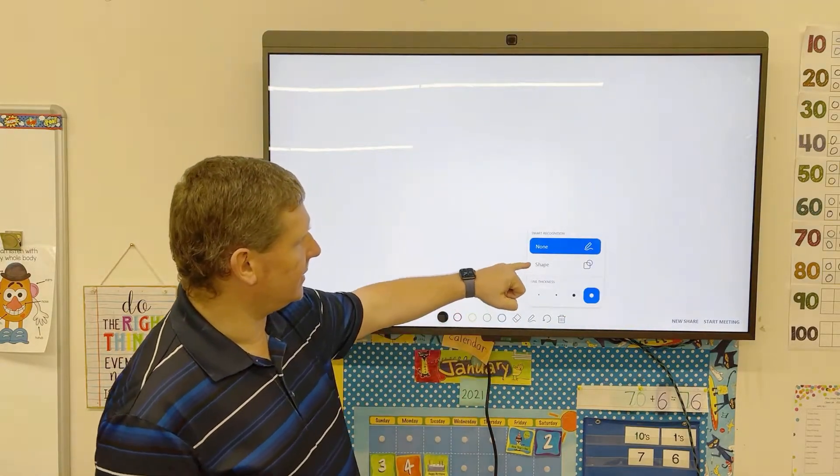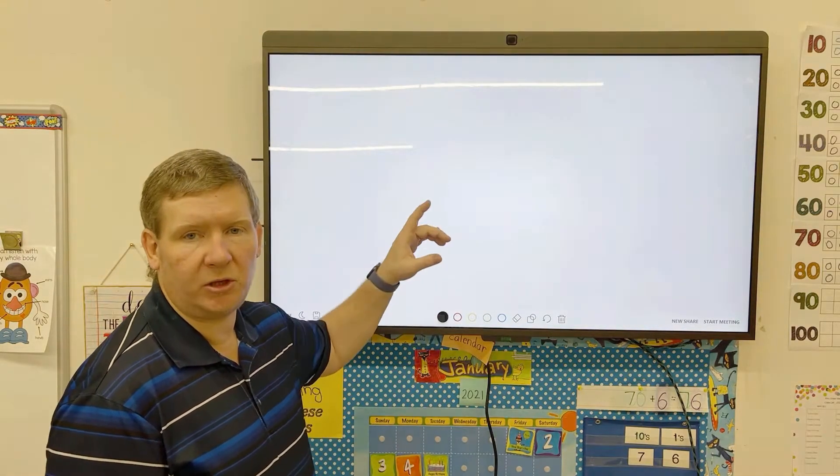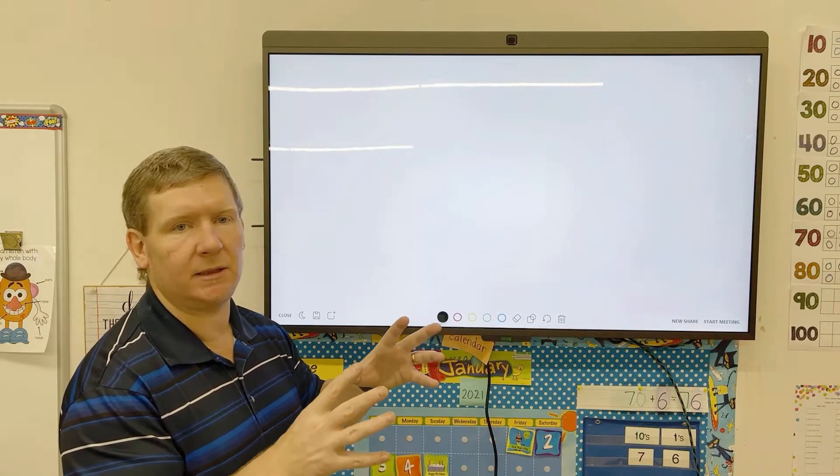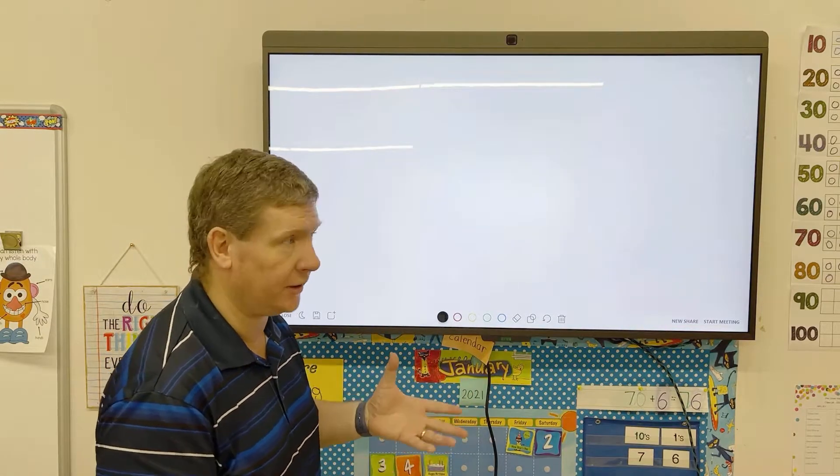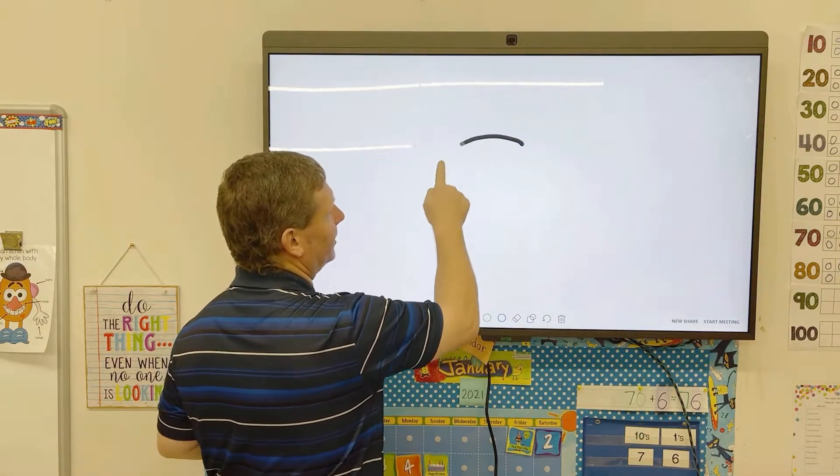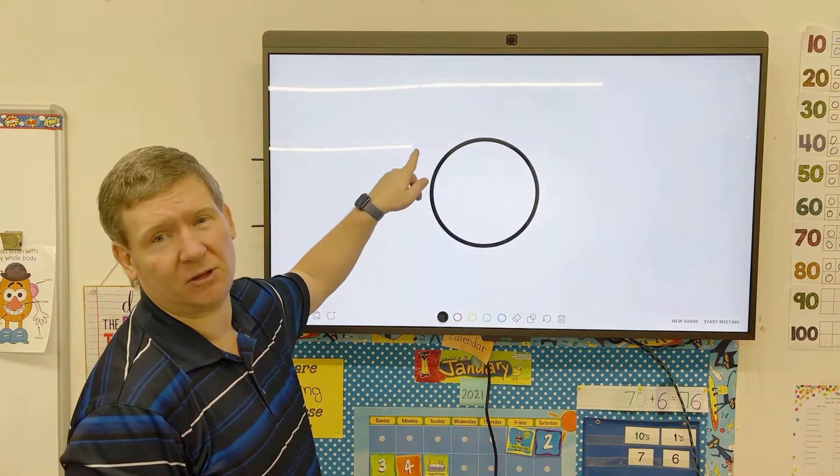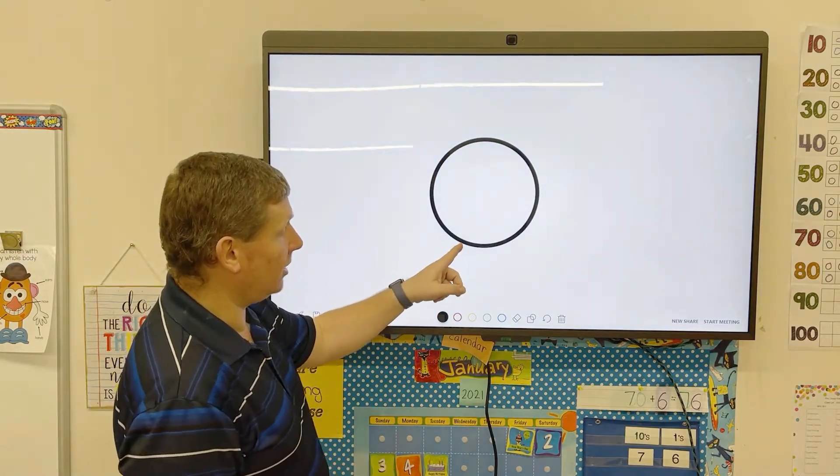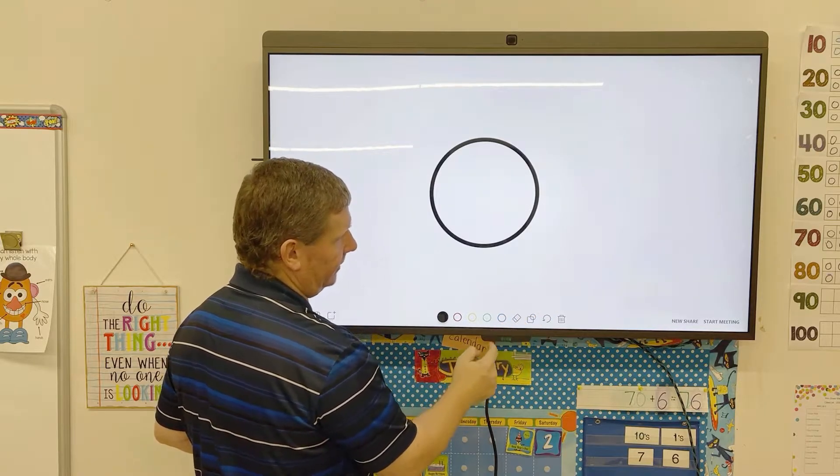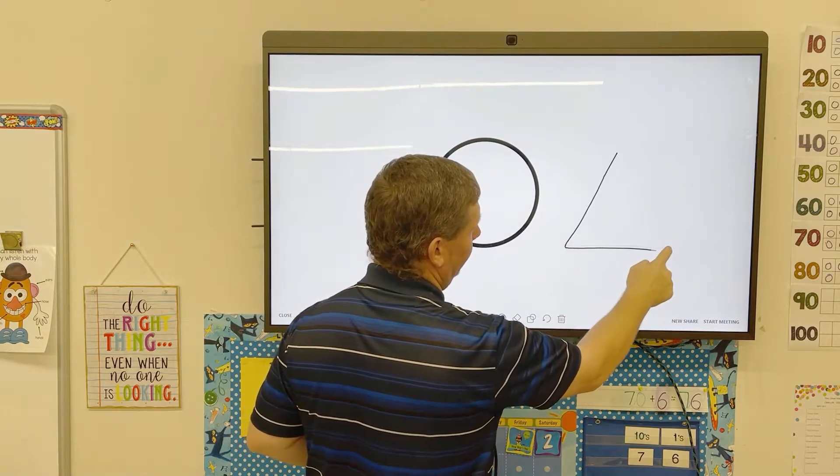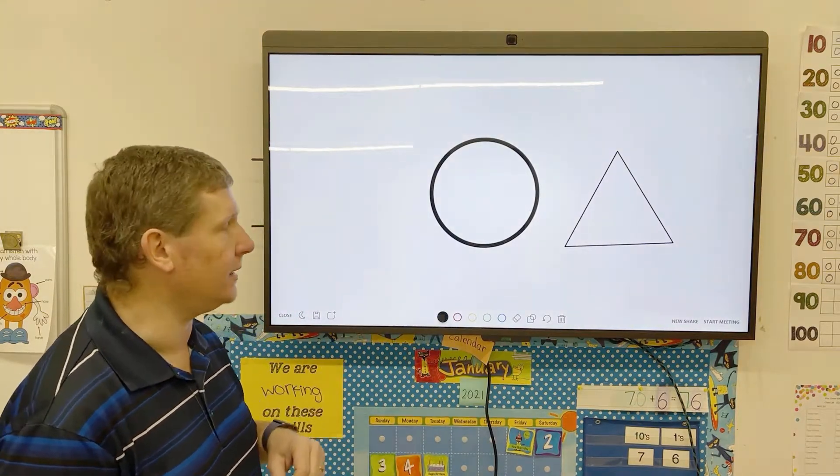The other thing you have is called the shape tool. What that will do is when you draw a shape, it will snap it to a more proper looking shape, especially if you're not really good at drawing circles or anything like that. So if I try to draw a circle, you saw that it snapped it, and my circle wasn't very good to begin with. It also uses thickness. So if I click on that and change the line thickness, and now I do a triangle, it will snap it to a triangle using the thickness that you had set.